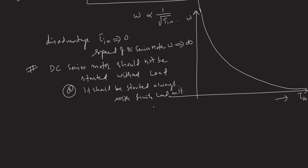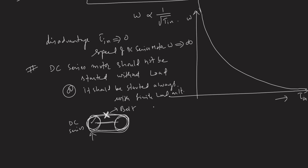Even when the motor is connected to a load through a belt, there is a possibility of belt failure due to aging. Under that condition the motor would also run to a dangerously high speed. That is why the motor and load are physically coupled through shafts, not through belts.